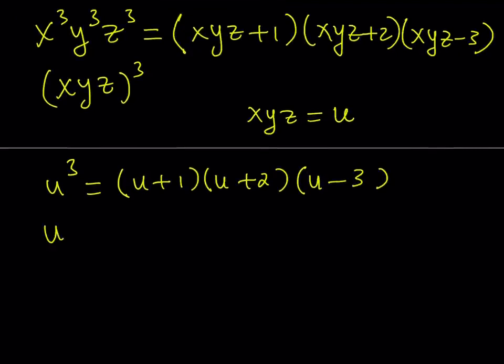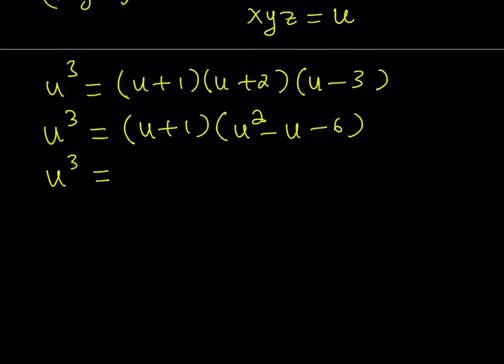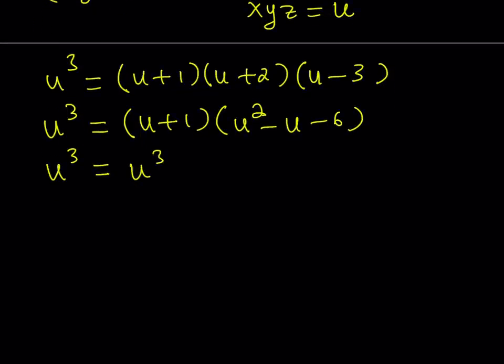If you go ahead and distribute this, you're going to get u cubed is equal to, let's go ahead and multiply u plus 2 and u minus 3 together. That should give me u squared minus u minus 6. And then if I distribute again, I should be getting u cubed minus u squared minus 6u plus u squared minus u minus 6.